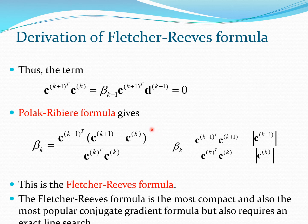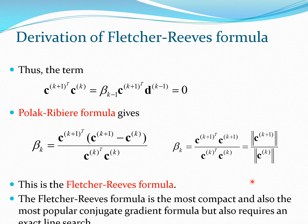Since the cross term c_{k+1}^T * c_k equals zero, the Polak-Ribière formula reduces further to a fraction involving only the norms of c_{k+1} and c_k — specifically their dot products. This is the Fletcher-Reeves formula, the simplest and most compact form. Note that we have invoked both exact line search and A-conjugacy conditions to arrive at this result.